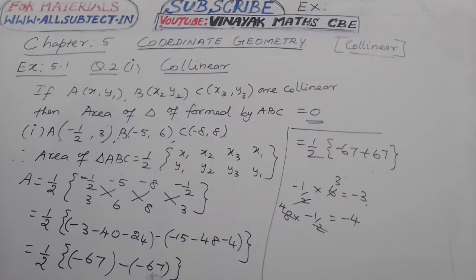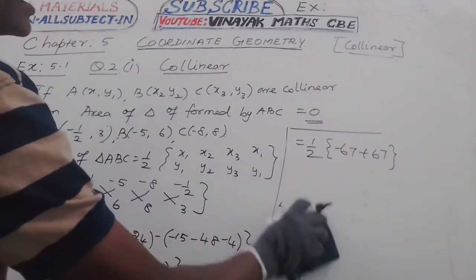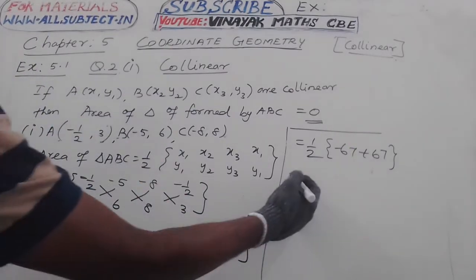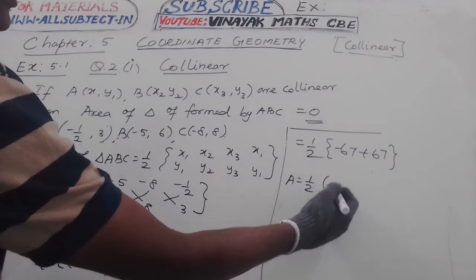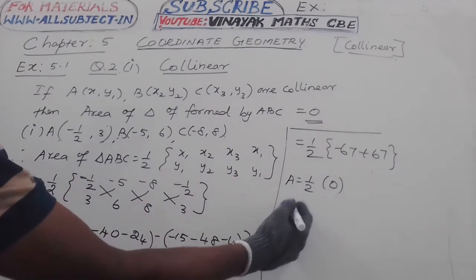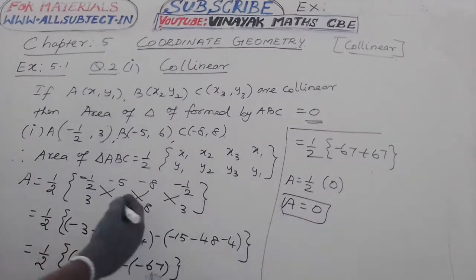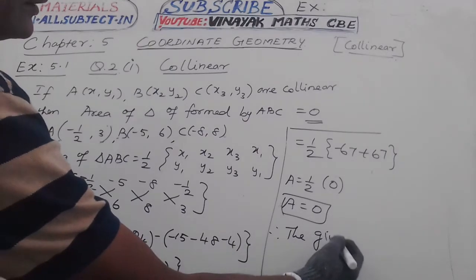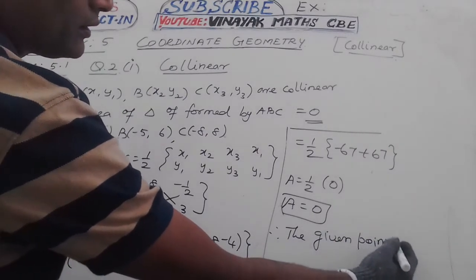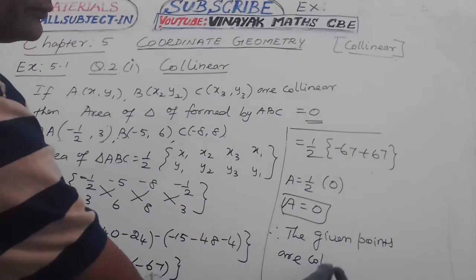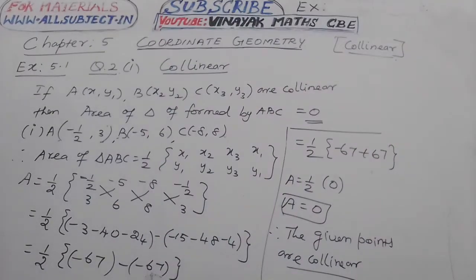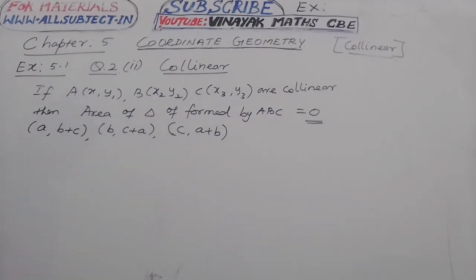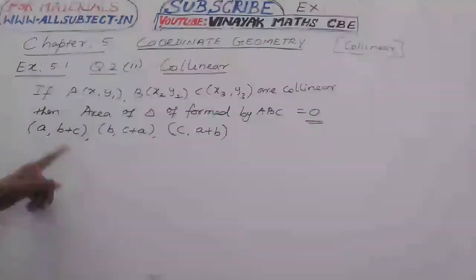Total cancels to 0. Therefore, area of triangle formed by these points, area of triangle A equals 1/2 into 0.